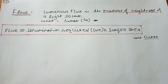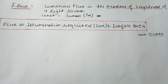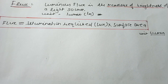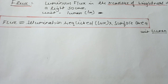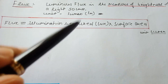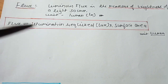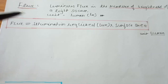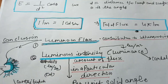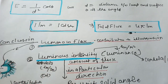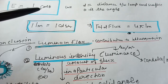Luminous flux is the measure of the brightness of a light source. It is denoted by lumen. By formula, flux equals the illumination required multiplied by the surface area. Luminous flux represents how bright a light source is and how it contributes to the illumination level of a room. Illuminance can also be defined using the inverse square law: E equals I over d squared multiplied by cos theta.